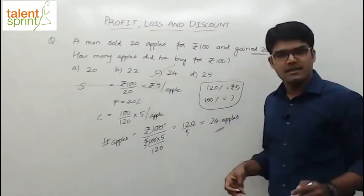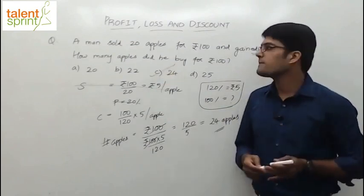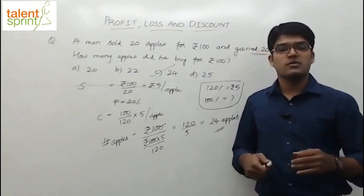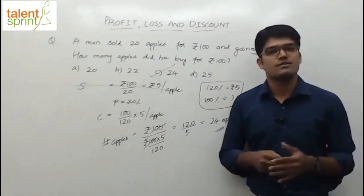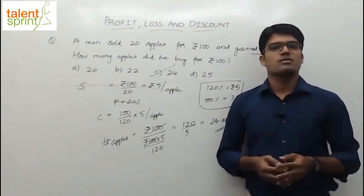So 24 apples can be bought. I am sure. Easy. But I thought it looks to be different, right? So you should not get confused while practicing more questions from profit and loss.